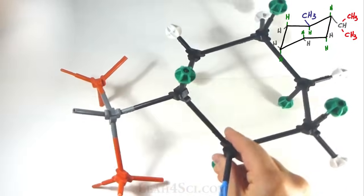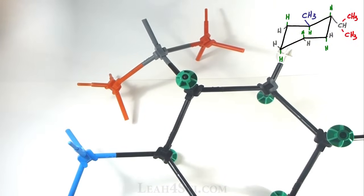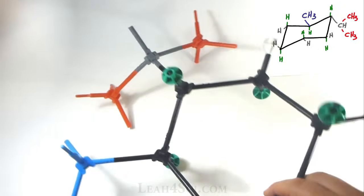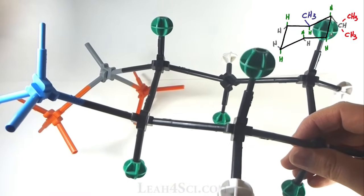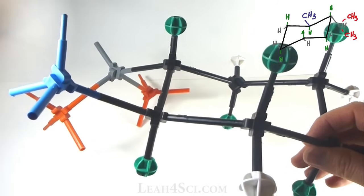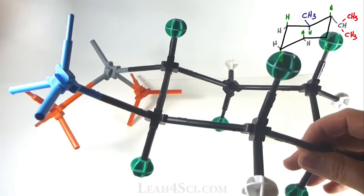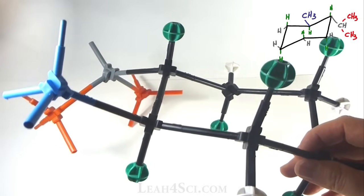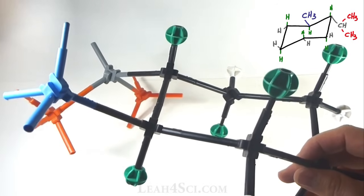What does this mean? Axial substituents are highly unfavored, equatorial substituents are highly favored and to draw a stable molecule, your goal is to put as many of the big and bulky substituents in the equatorial position. Where the bulkier it is, the more likely it wants to be equatorial and the rest can be axial because they'll be less unfavorable.